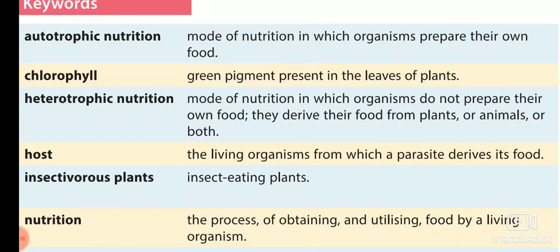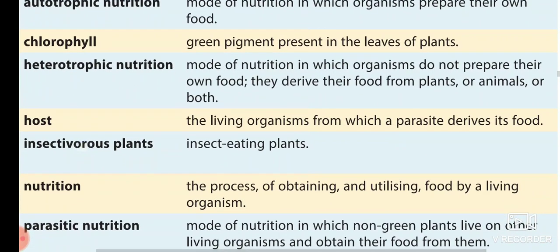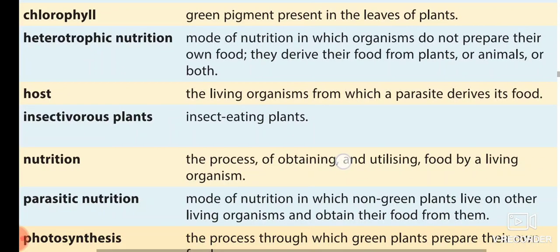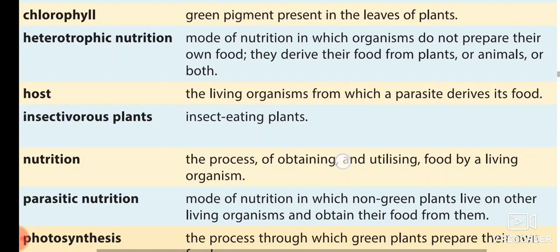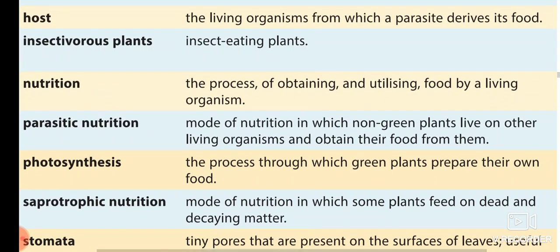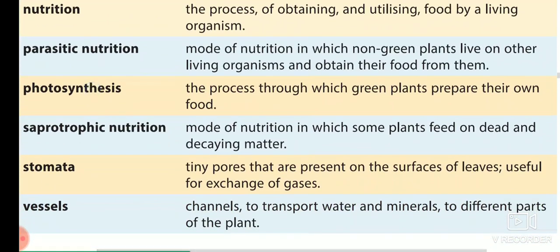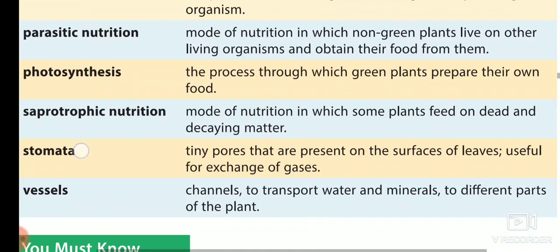You will revise these once. The definitions of all are given: autotrophic nutrition, what is chlorophyll, what is heterotrophic nutrition, host, insectivorous plants, nutrition, parasitic nutrition, photosynthesis, saprophytic nutrition, stomata and vessels.